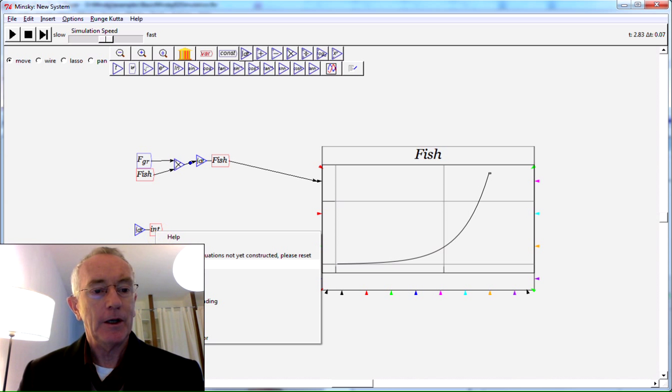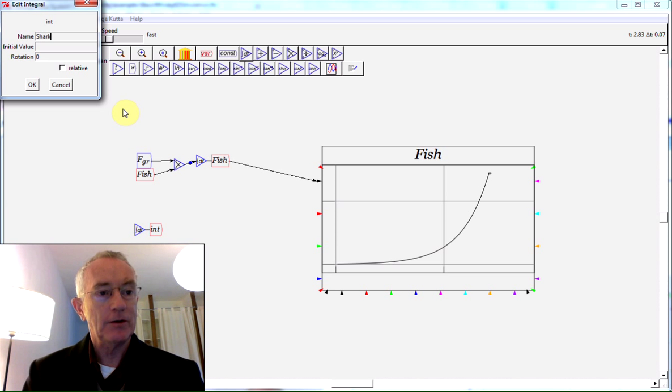If you right-click here and choose edit, I can change the name to sharks. Let's say there's five sharks initially.